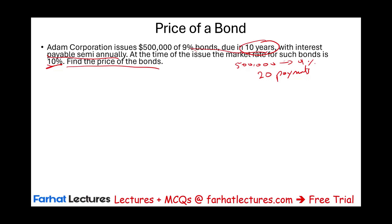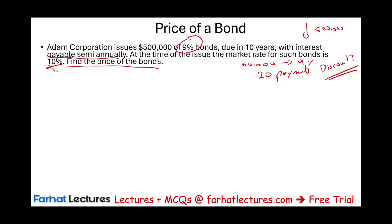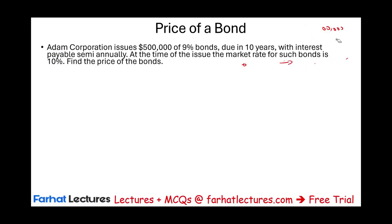Before performing any computation, you should know that the price of this bond will be less than half a million — this bond will sell at a discount. Why? Because the company is offering 9% while the market is paying 10%. No one in the right mind will pay the company half a million and earn 9% when they can go somewhere else and earn 10% from similar companies. So the bond will sell at a discount, and we have to find the discounted price.